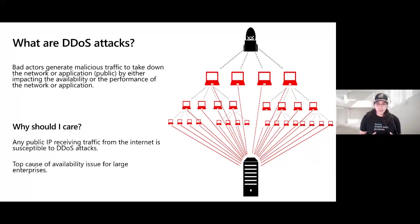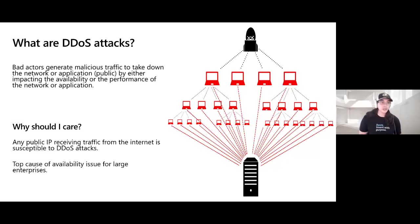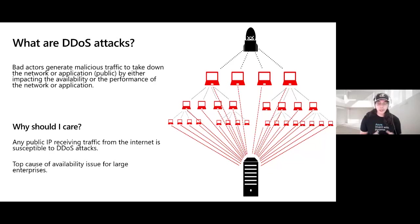This can result in poor website or application performance or knock it offline altogether. This style of attack is one of the biggest security concerns today, as it can be costly to your business but incredibly cheap and easy for bad actors to initiate. Any public IP is vulnerable to a DDoS attack and is one of the top causes for service availability issues for large enterprises. A DDoS attack, if not mitigated, can be costly to your organization due to loss of customer interaction or from dynamic resource scaling to handle the volume of new traffic.